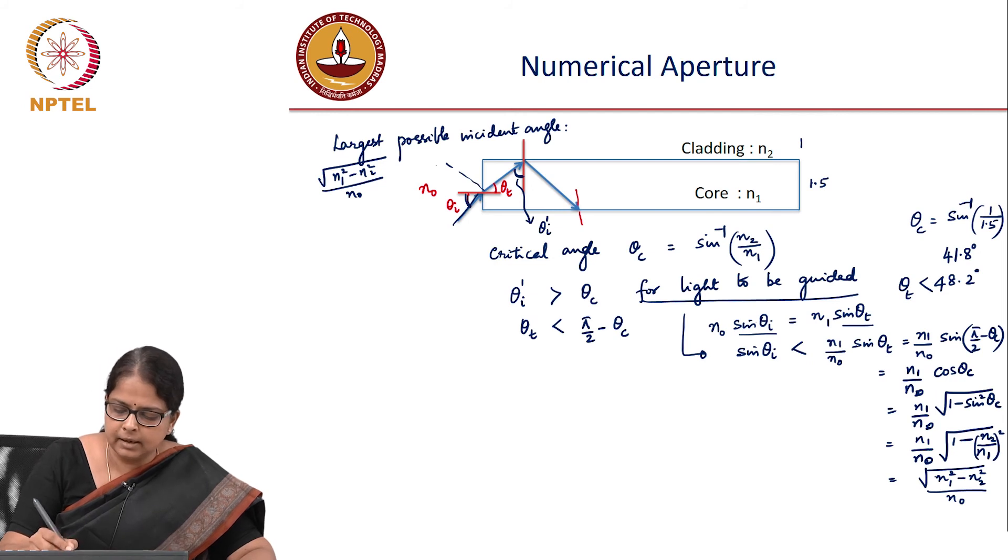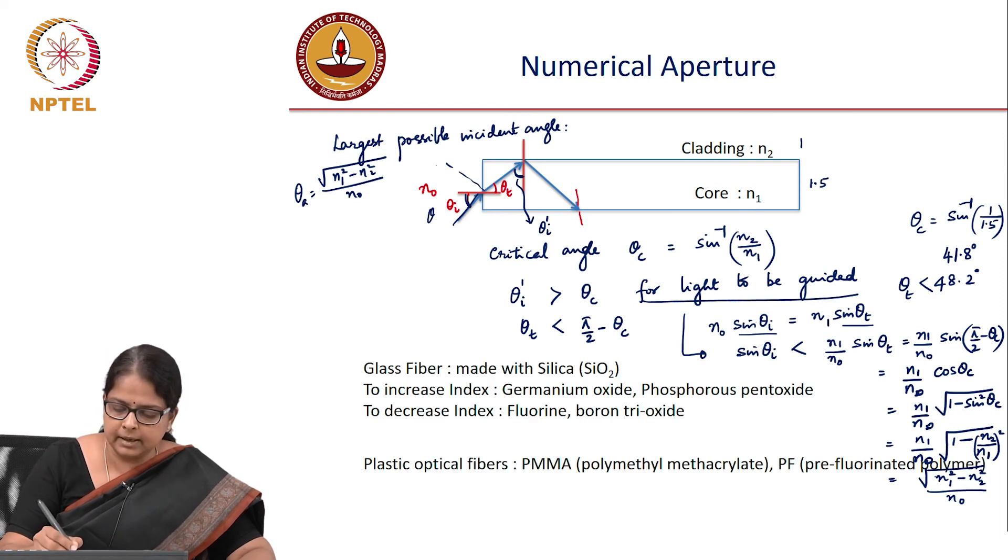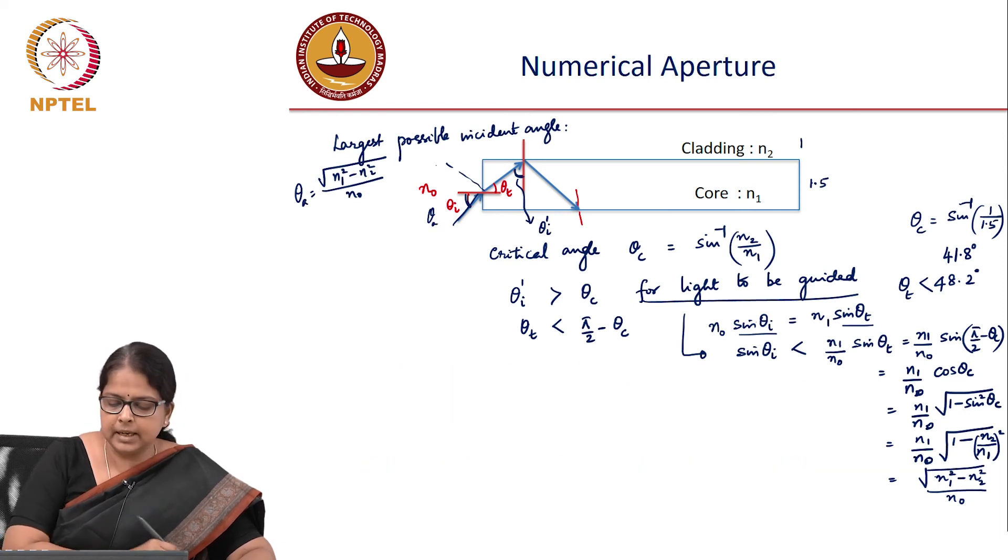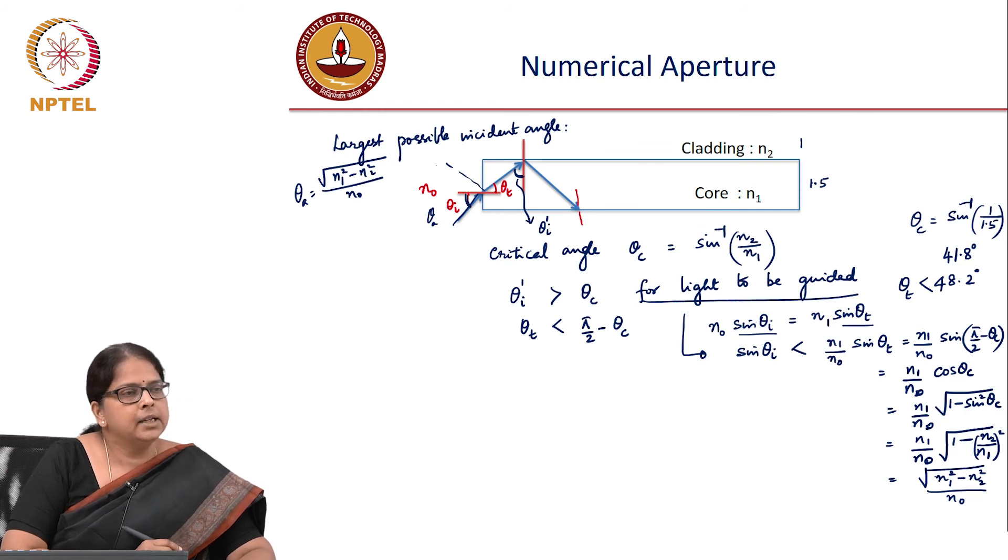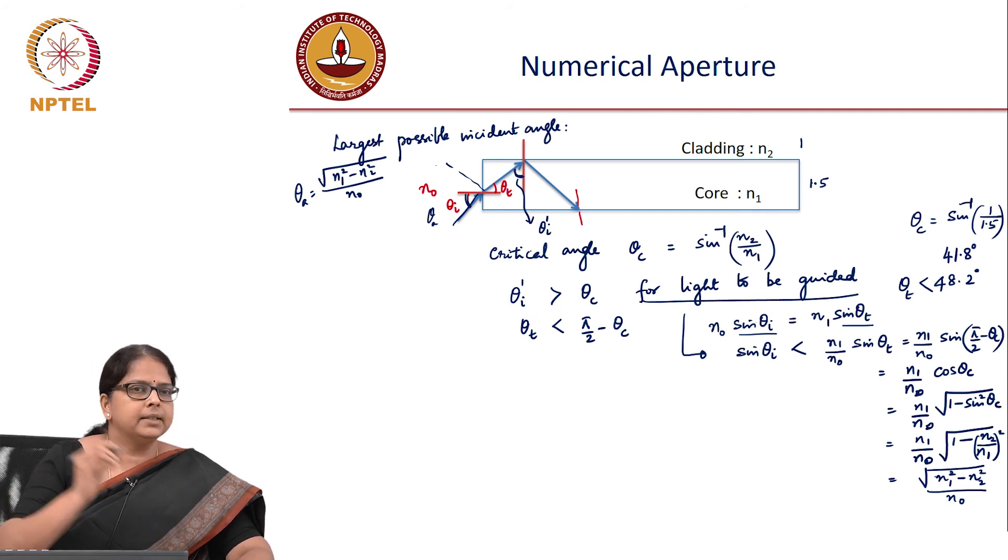This is our fundamental understanding of how light gets guided into the fiber and what the acceptance angle or numerical aperture is. The acceptance angle is the largest possible incident angle such that light incident on the core-cladding interface is guided.